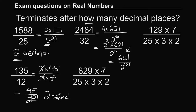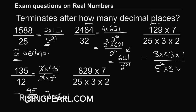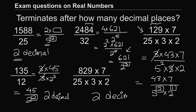We have established that the fourth expansion will not terminate. For the last problem: after cancelling the 3s, the numerator is 43 times 7, and the denominator is 5^2 times 2^1. The decimal expansion terminates after the greater of the two powers, which is 2. So this decimal expansion will terminate after 2 decimal places.